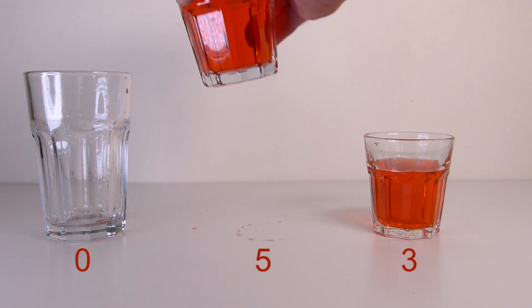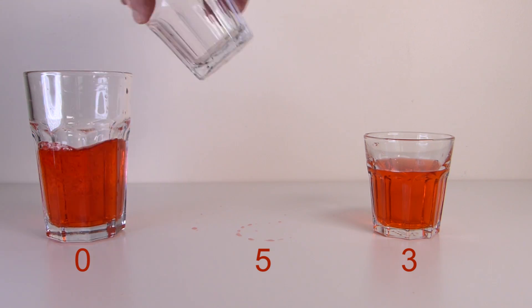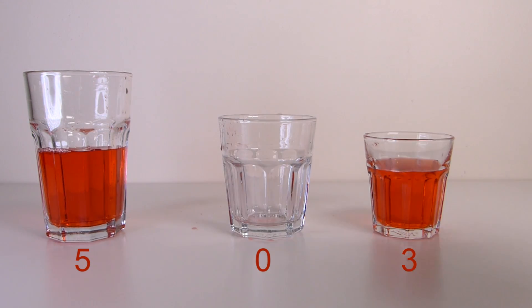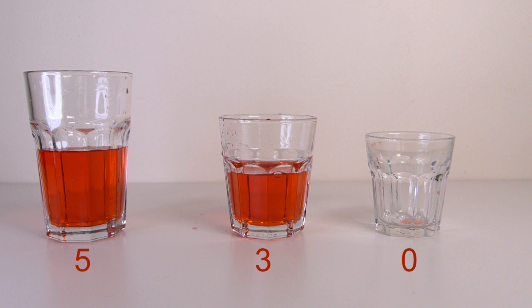One problem in our trial and error approach to the three-glass problem was we were only thinking about what was in the glasses, not what wasn't in the glasses. If we keep track not only of how much is in the glass, but how much extra space is in the glass, then we can use that extra space to measure and remove quantities from the other glasses.